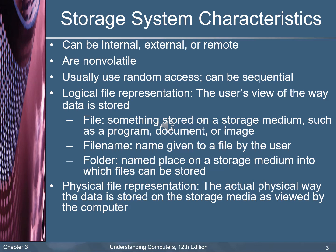Random access means that it is rotated, like a CD. Logical file representation is the user view of the way data is stored, from the file allocation table. A file is something stored on a storage medium such as a program, document, or image. Each file you store on your computer should have a name. You give it a name and it can also be stored in a folder or subfolders, as the organization you may adopt by yourself.